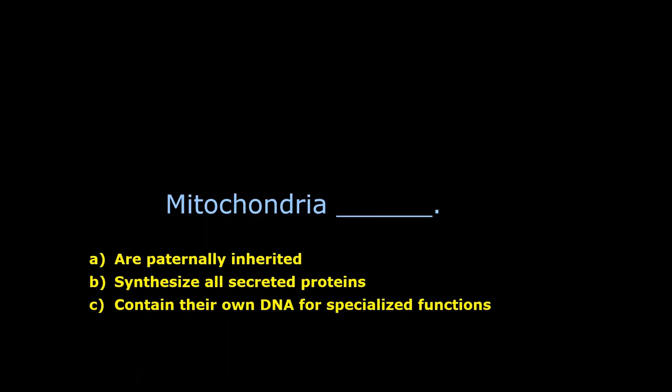Mitochondria blank. Let's think what we know. Mitochondria have a double membrane. They have cristae. They help make ATP. They do aerobic cellular respiration. Let's see if any of these match that. Mitochondria are paternally inherited? No, they're inherited from mama. They're maternally inherited. They synthesize secreted proteins? Nope, that's what the rough ER does. Mitochondria contain their own DNA for specialized functions? That is true. They do have their DNA and they do copy it independently of the cell. So that may be our answer. Assist mitosis by producing spindle fibers? Nope, that's what centrioles do. So the answer must be C. And it is correct.